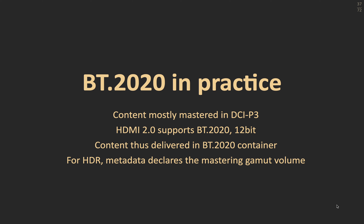In practice, content is still mostly mastered in DCI-P3, as there aren't really screens which can display the entirety of the 2020 gamut, although some can display up to 90%. Also, HDMI only supports 2020 — it doesn't support P3. So what happens is it's mastered in P3 and then converted into the 2020 color space, referred to as being in a 2020 container. And for HDR, there is metadata to say what the mastering gamut volume is — volume, not just area.